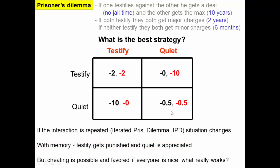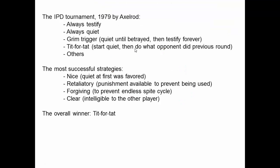However, if the system reaches mutual quiet, any individual has motivation to switch to testifying to get a lesser punishment. A simulation organized by Axelrod in the late 70s set up competition among many strategies in a computer. Strategies included: always testify, always be quiet, grim trigger (be quiet until betrayed, then always testify), tit for tat (start quiet, then mirror whatever the opponent did last round), and several others.